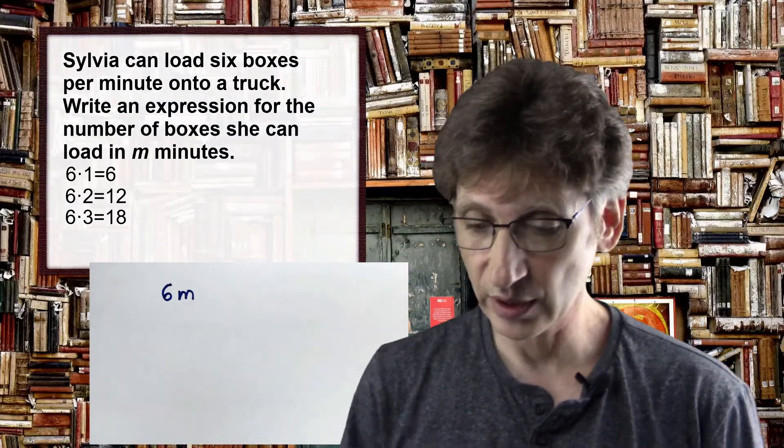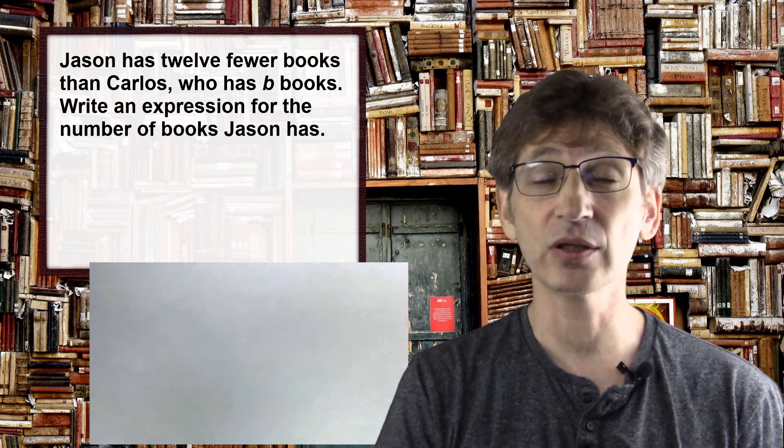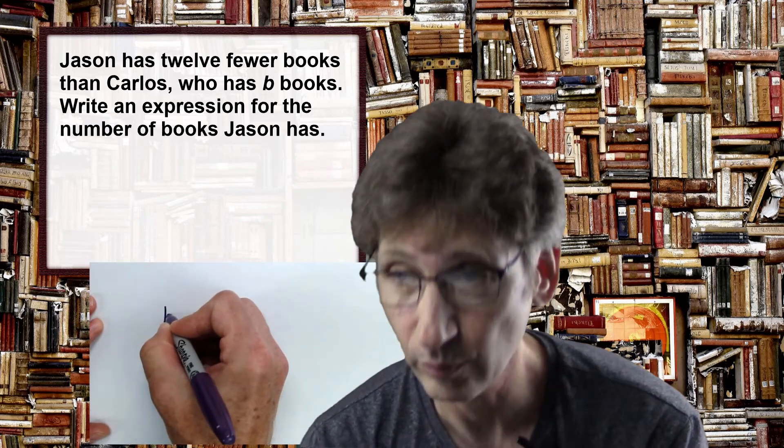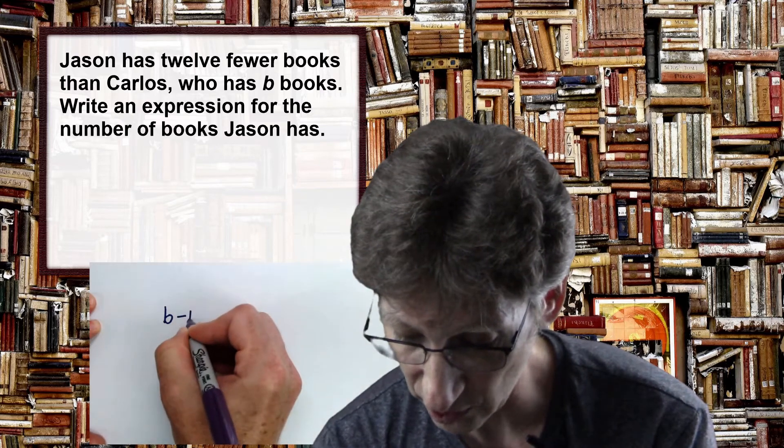Let's take a look at another situation. Jason has twelve fewer books than Carlos, who has b books — b being the number of books, a variable. Write an expression for the number of books Jason has. Jason has twelve fewer than Carlos, so if we know how many Carlos has, we subtract — because fewer implies subtraction — we subtract twelve from that number. But we don't actually know how many Carlos has, so we use the variable b.